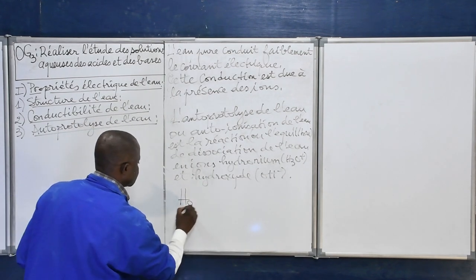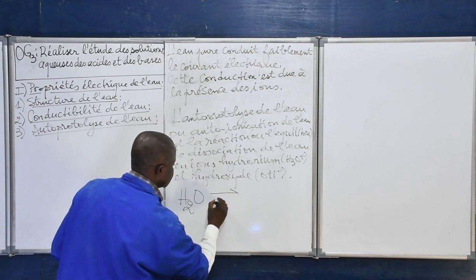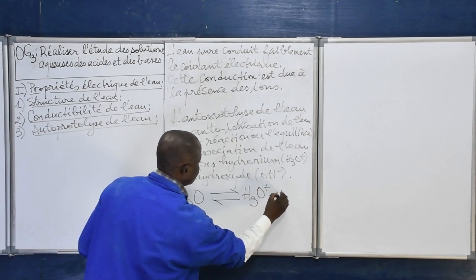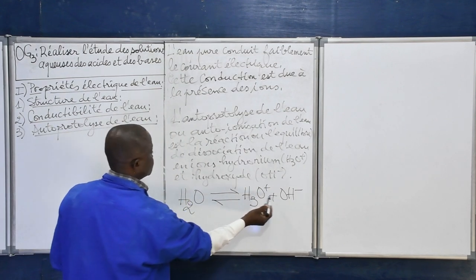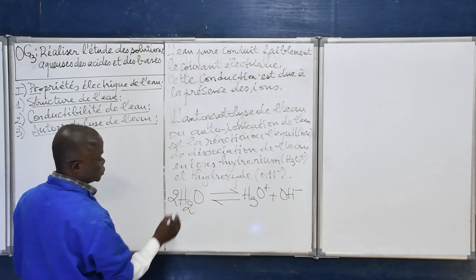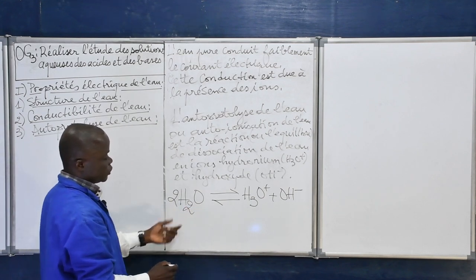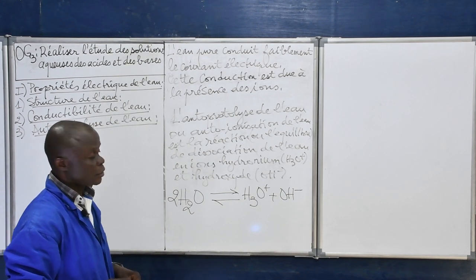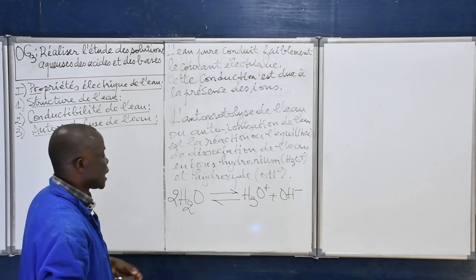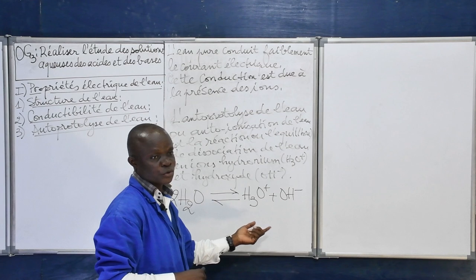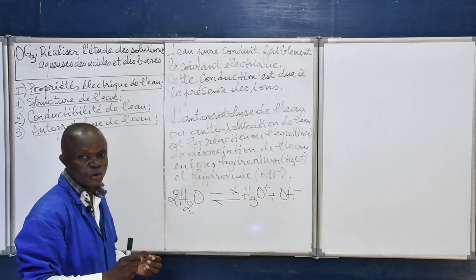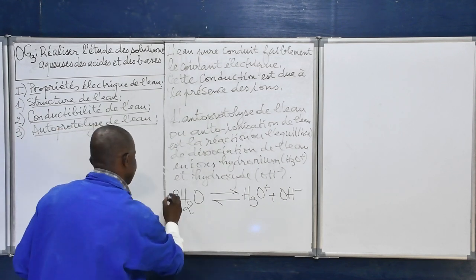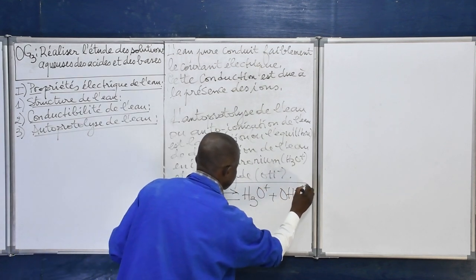Nous avons donc H₂O qui se dissocie partiellement en donnant ion hydronium plus ion hydroxyde. En équilibrant, nous ajoutons 2 devant la molécule d'eau. L'eau pure conduit faiblement le courant. Cette faible conduction est due à la faible quantité des ions H₃O⁺ et OH⁻ dans la solution. Voilà l'équation d'autoprotolyse de l'eau pure.